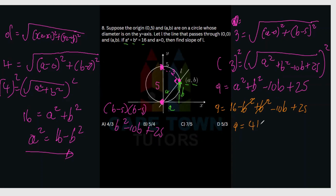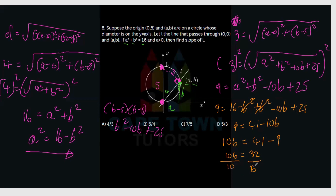So we have 9 equals 41 minus 10B. Bringing 10B to one side: 10B equals 41 minus 9, which is 32. Dividing both sides by 10 gives B equals 32 over 10. The common factor is 2, so 2 goes into 32 sixteen times and into 10 five times. Therefore B equals 16 over 5.